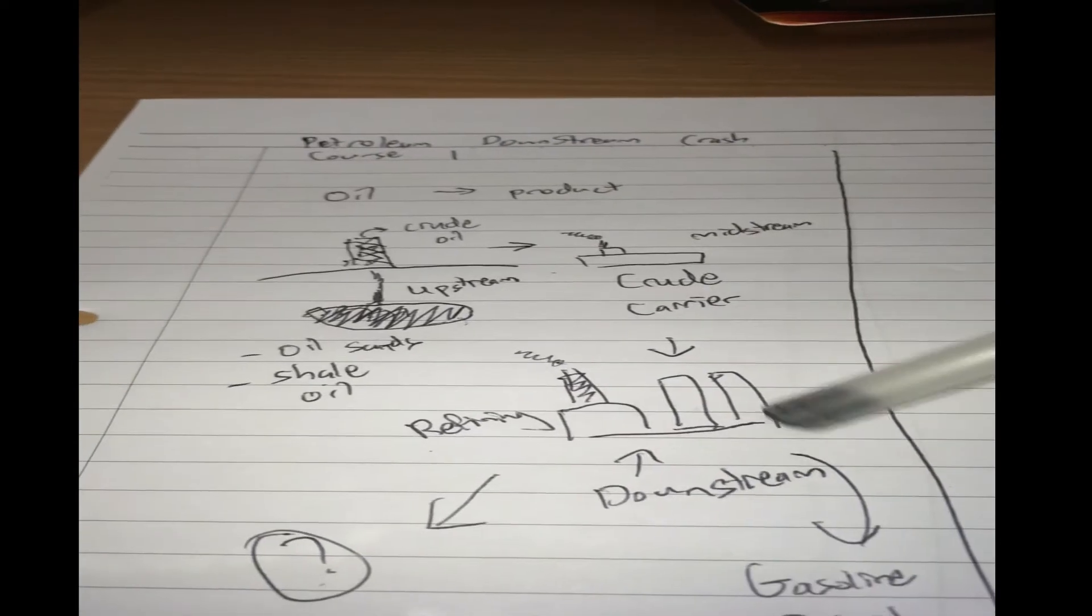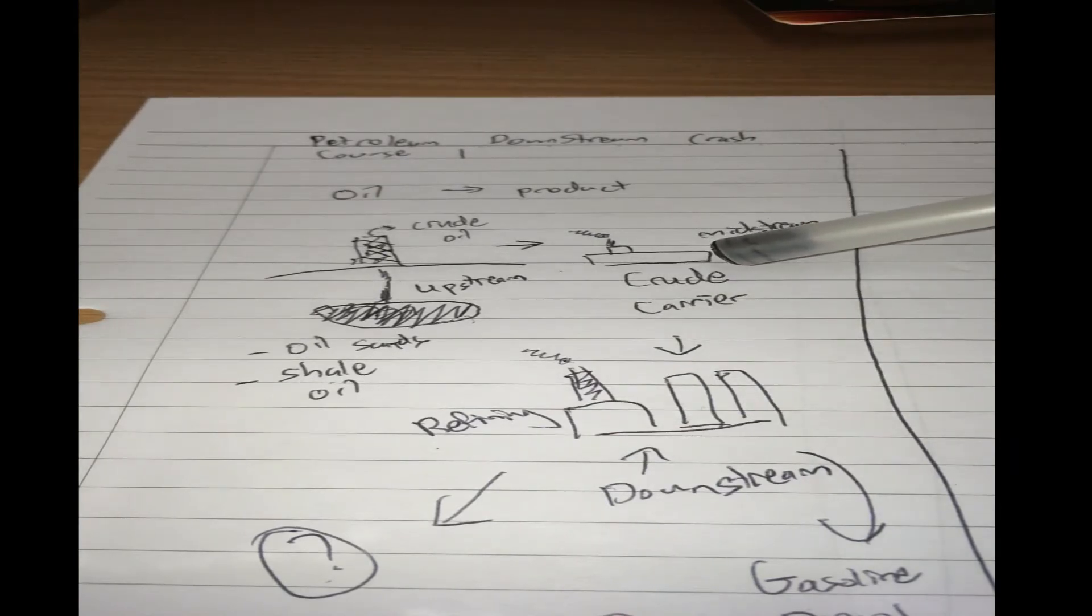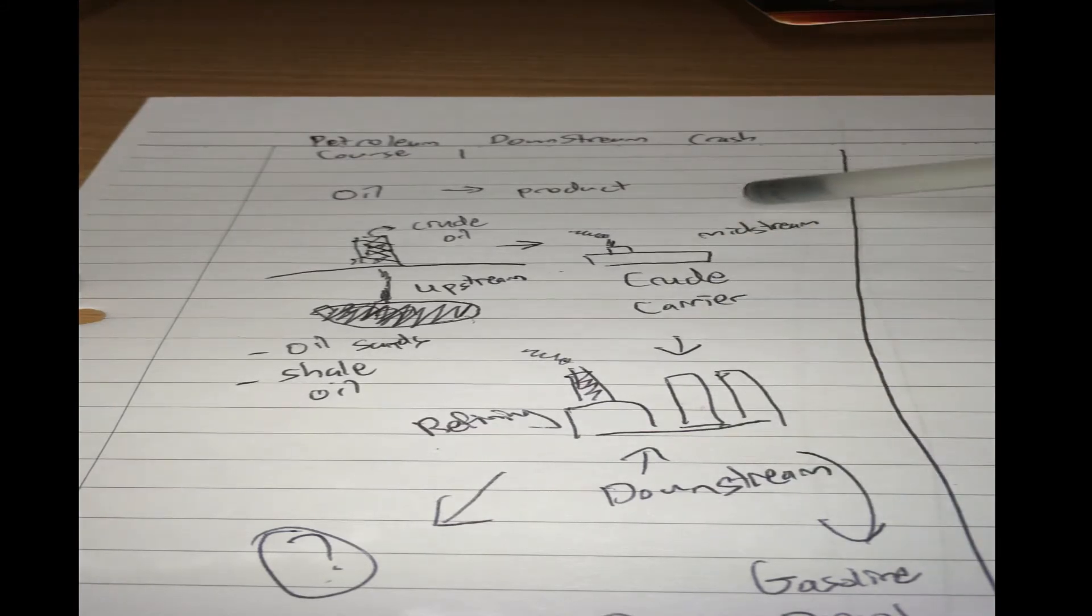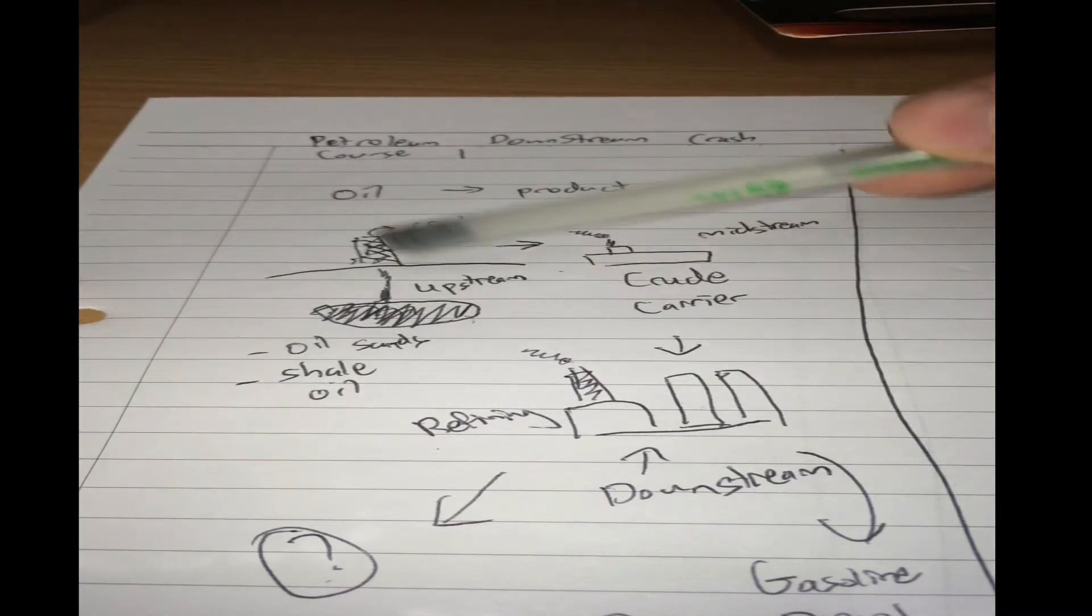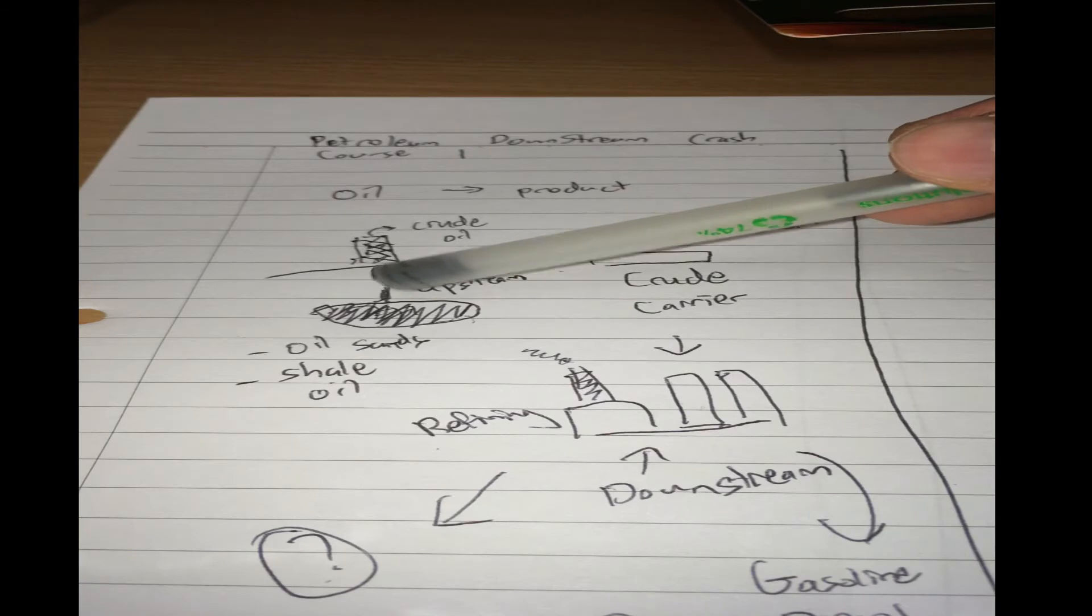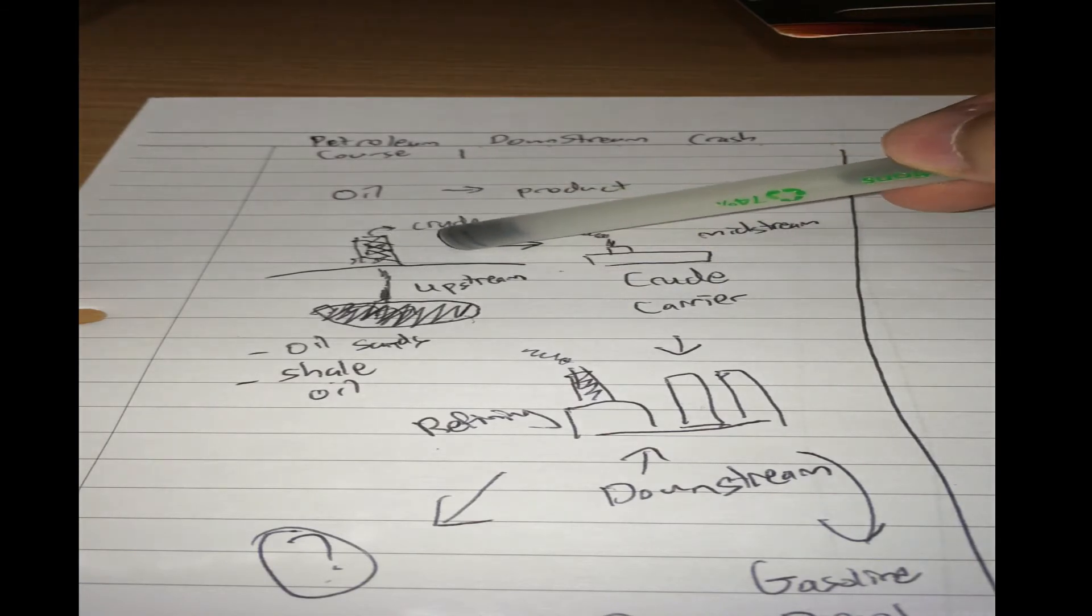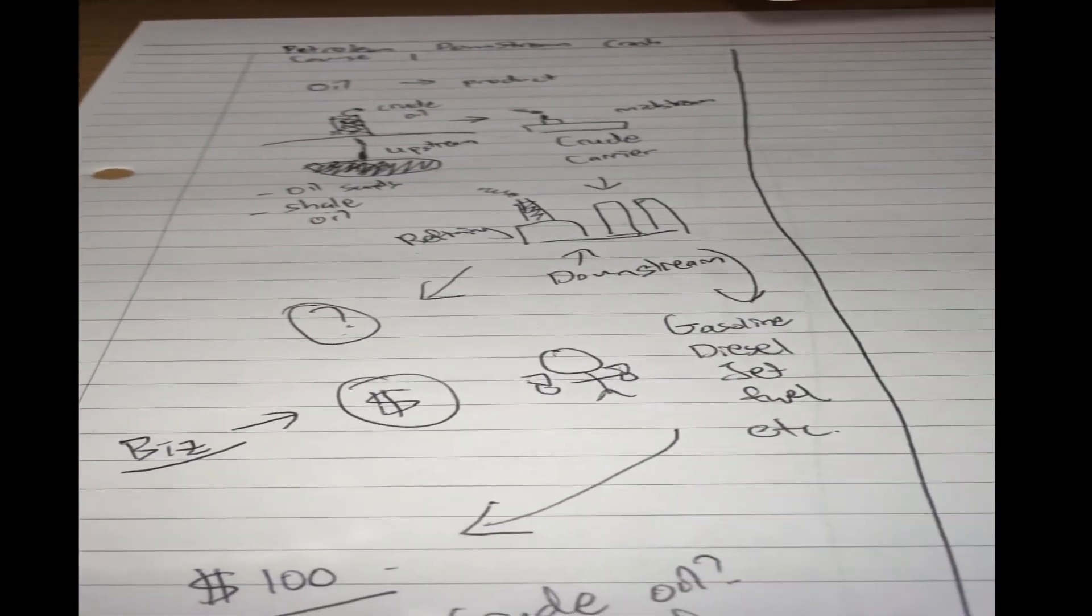Now, downstream. Downstream is the refining section of oil. Downstream is most synonymously used with refining. The midstream is most commonly associated with the transport of oil from the well to the refinery. And the upstream is talking about crude oil production. Crude oil production means you're mining out the oil from underground, putting it into the barrels, or putting it into the crude carriers.